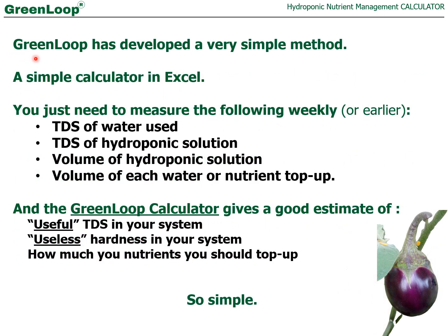For this purpose, Green Loop has developed a very simple method — a simple calculator in Excel. What you need to do is measure the following on a weekly basis, or earlier if your plants are tall: the TDS of the water you are using, the TDS of the hydroponic solution, the volume of the hydroponic solution in your reservoir, and the volume of each top-up of water or nutrients on a weekly basis.